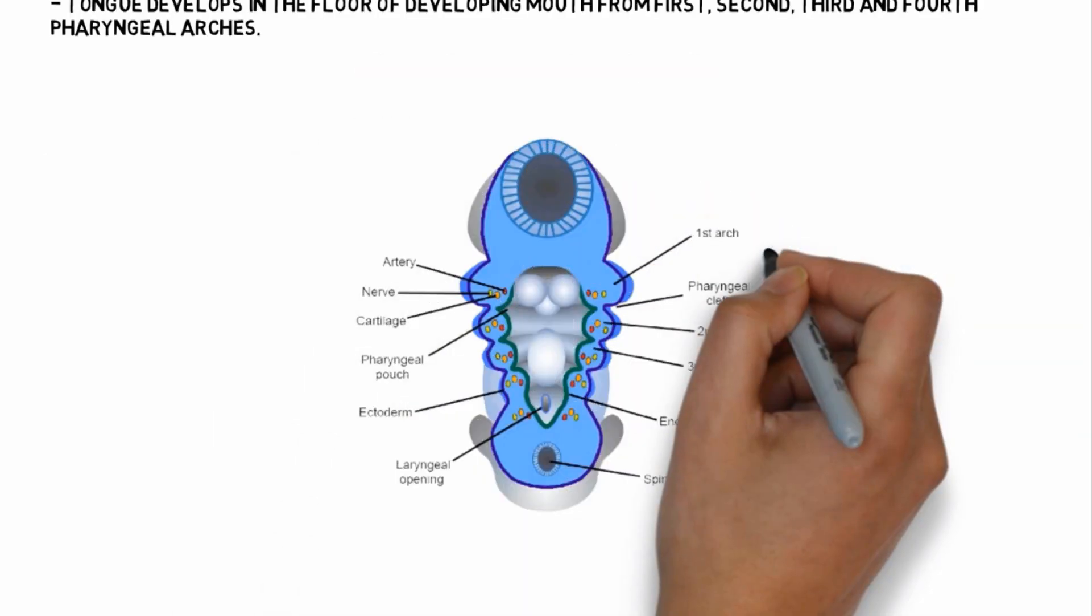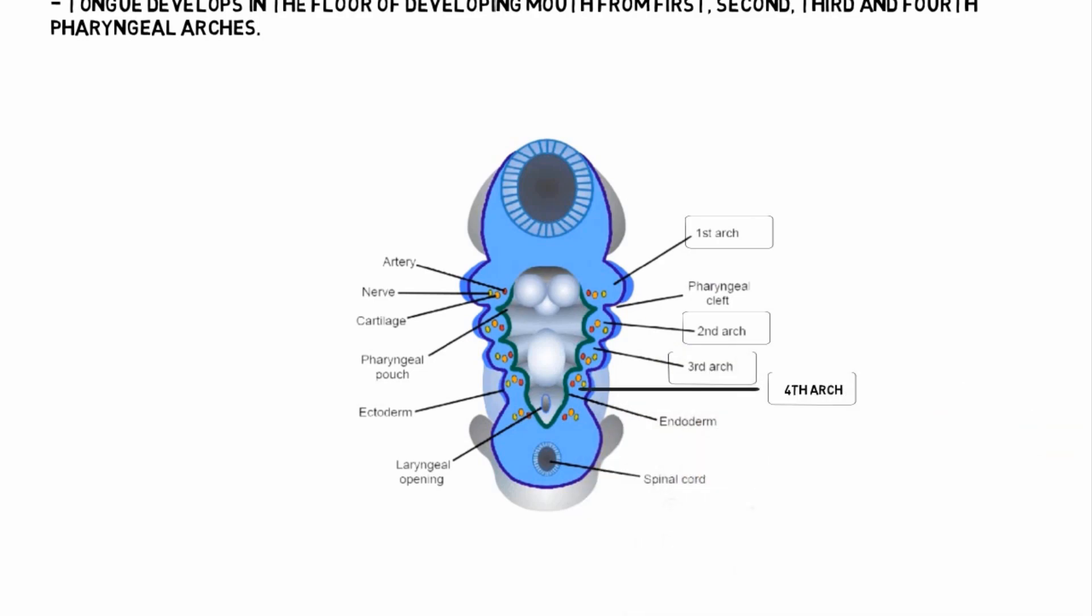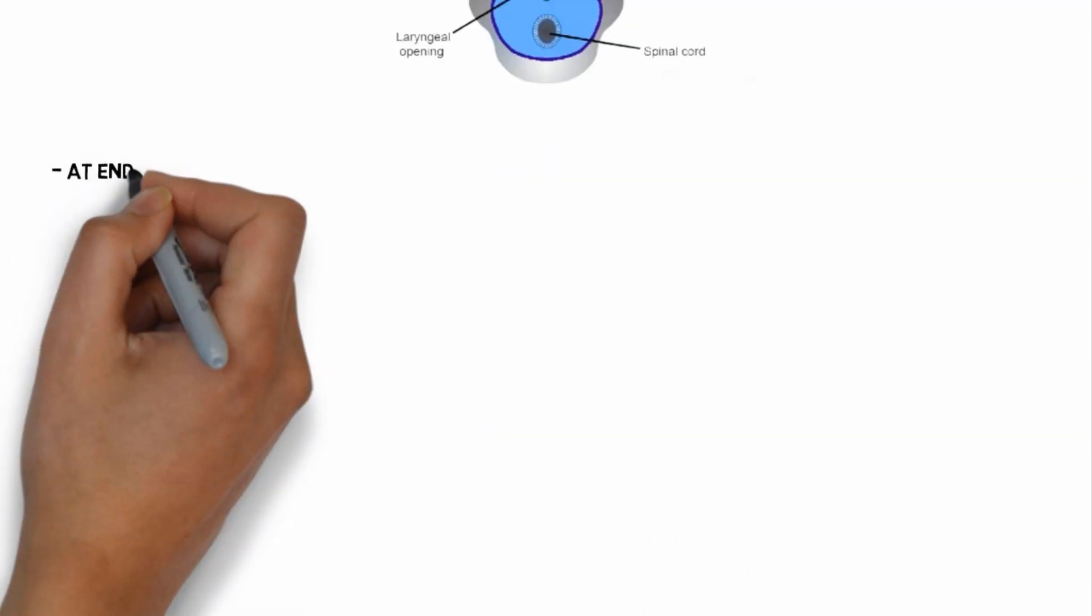Here is the image of pharyngeal arches. Pharyngeal arches 1, 2, 3 and 4 play important role in developing of tongue.